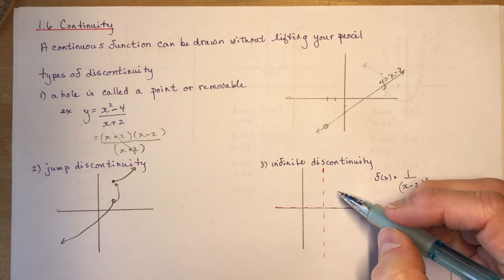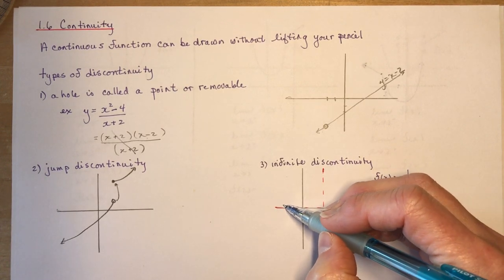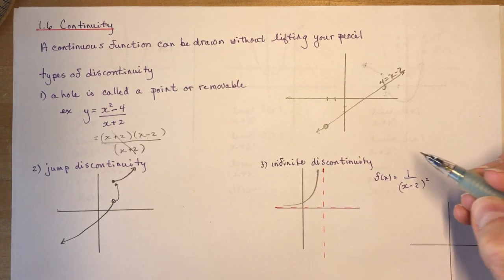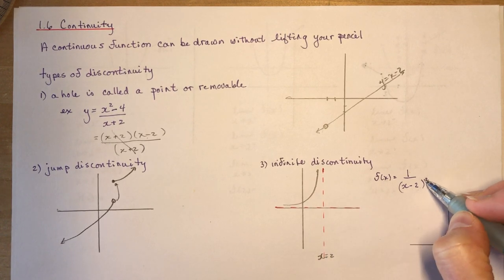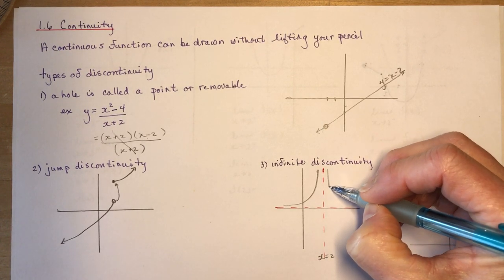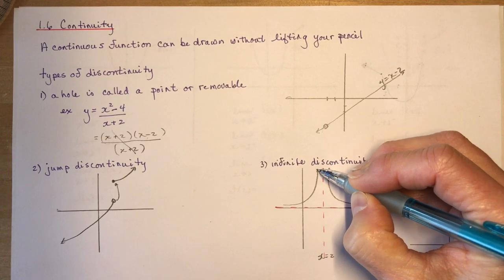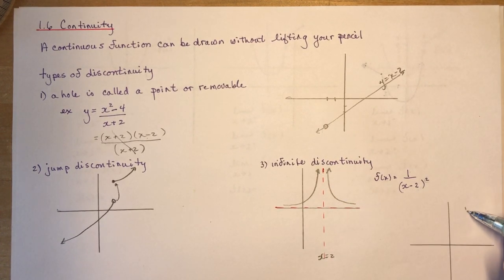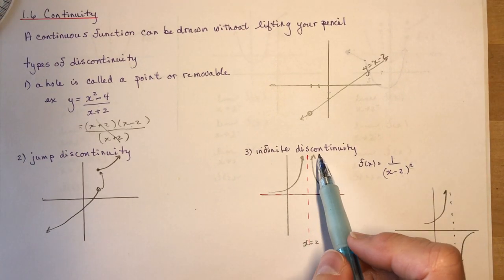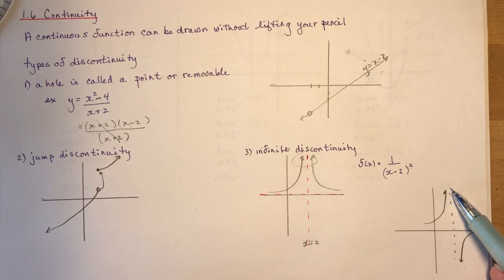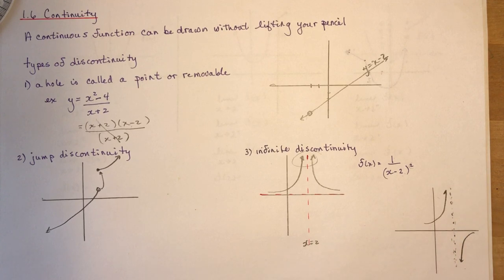An infinite discontinuity occurs when you have asymptotes. For instance, with a function like 1 over (x minus 2), you'd have a vertical asymptote at x equals 2. We could have an even function where both sides go in the same direction, or an odd function where it goes up on one side and down on the other. Both are infinite discontinuities because the two branches don't join.